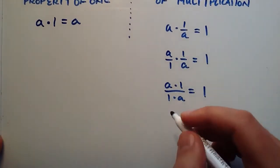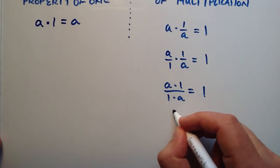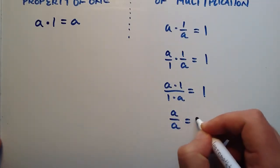So we've shown now, between these two properties, that the inverse property of multiplication can be rewritten as a over a is equal to 1.